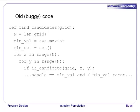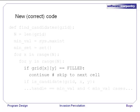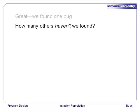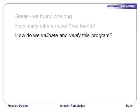We'll modify this to say, if the cell is already filled, then continue around the loop, i.e. don't do anything with this cell because it's already been marked as filled. Great. We found one bug. How many others haven't we found? How many are still lurking in the code? How do we validate and verify a program like this? We'll discuss this topic in the next episode.